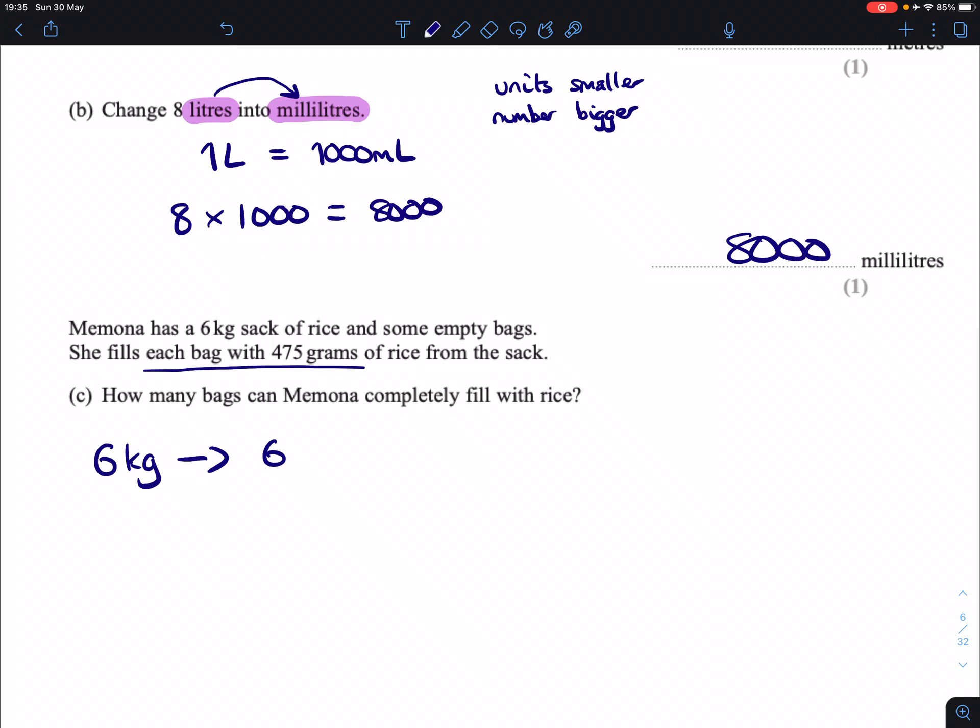So kilograms into grams, there's 1,000 grams in a kilogram. The wordy bit, the units get smaller, because grams are smaller than kilograms, which means the number has to get bigger. And I should have just mentioned here, there's 1,000 grams in a kilogram. So 6,000 grams.